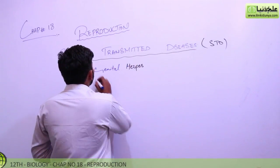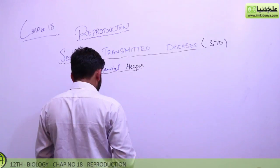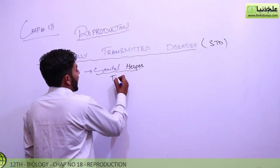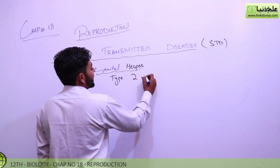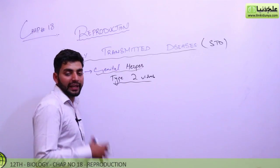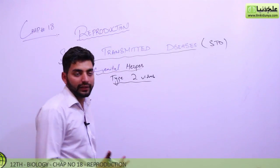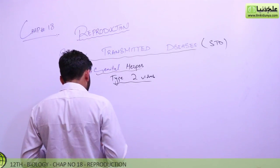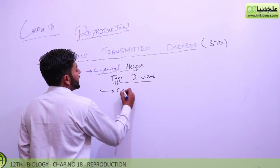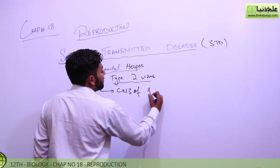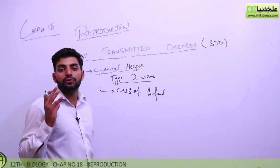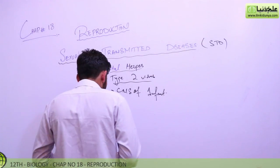Genital herpes is basically caused by herpes simplex type 2 virus, type 2 virus. The problem is caused by type 2 virus. What it basically does is target the CNS of infant, newly born baby CNS.